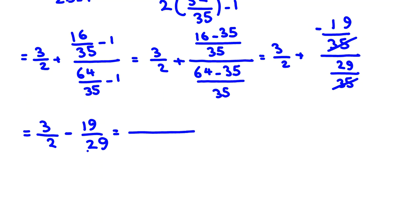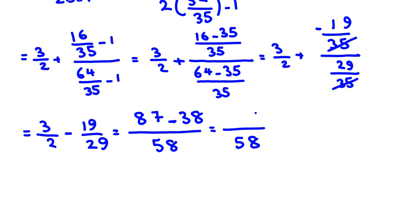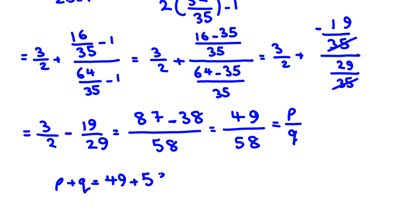So the full expression is 3 over 2 minus 19 over 29. Using common denominator 58: 3 times 29 is 87, minus 2 times 19 is 38, giving 49 over 58. Since 58 equals 2 times 29 and 49 equals 7 squared, it is in lowest terms. P plus Q equals 49 plus 58 equals 107. We've confirmed the answer 107 with both solutions.